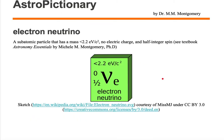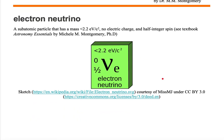Here we're looking at a sketch of this elementary particle called an electron neutrino. The symbol is ν_e, and the properties are that it has a mass less than 2.2 eV per c squared, no electric charge, and half-integer spin.